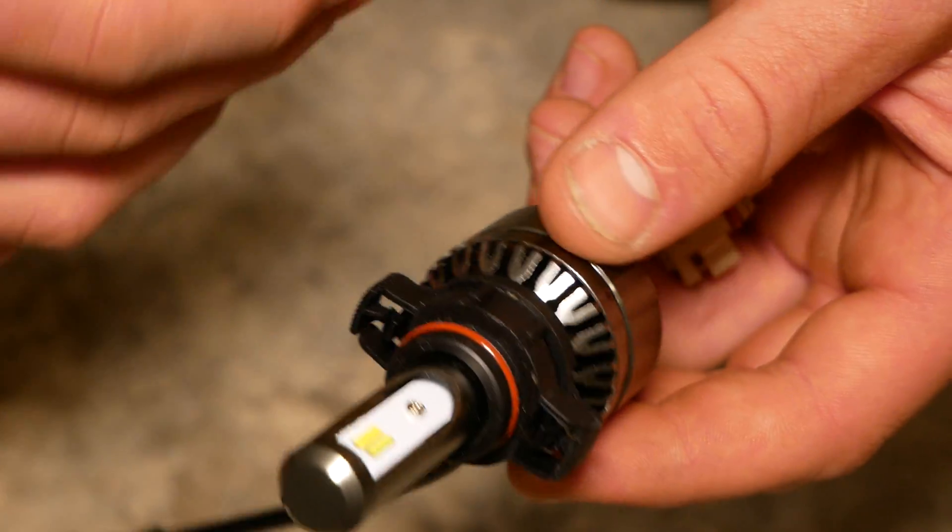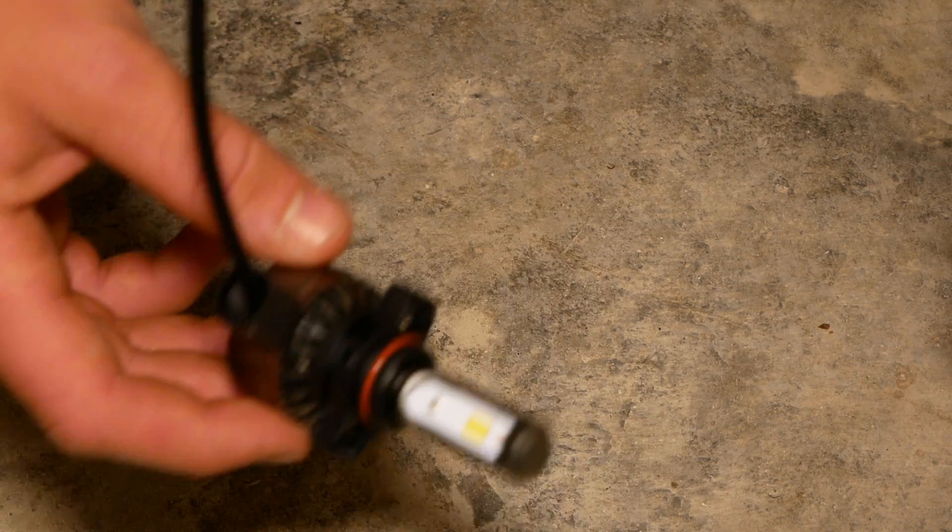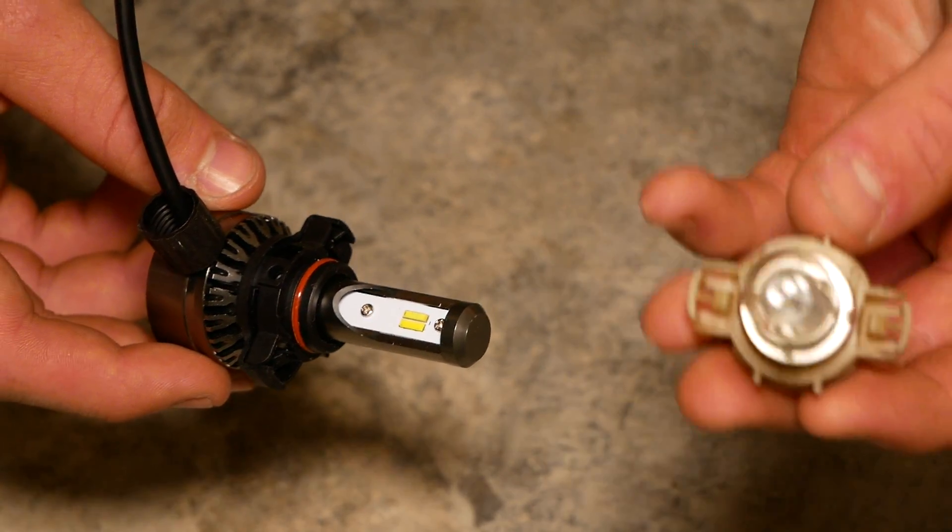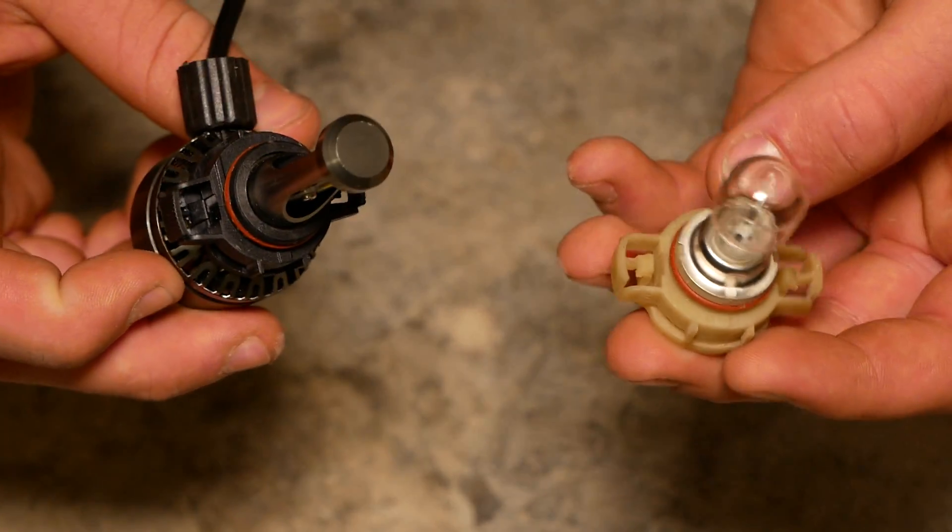We're going to be trimming off the tabs to give it a better fit in the car. This isn't necessary for all models but for this particular Jeep it is necessary, so you will want to keep your old bulbs for reference when doing this trimming.